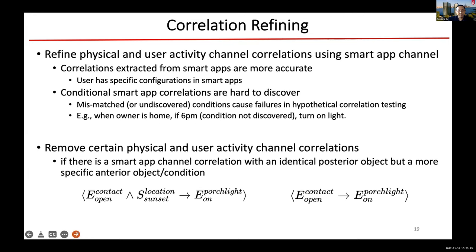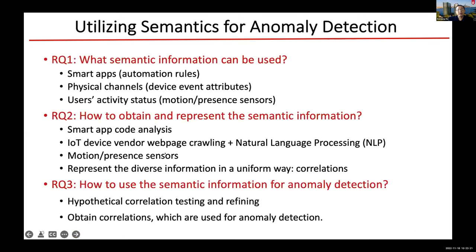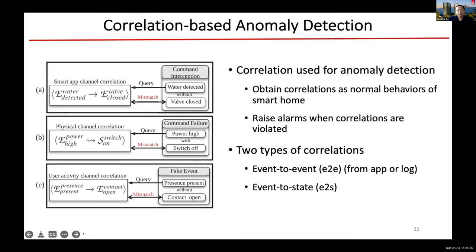After getting the correlation and finalizing the test data, we have a final set of correlations. Once you have the final set of correlations, it can be easily used to detect anomalies. Our system is deployed and observes the smart home in real time, updating states in a virtual shadow engine. Whenever an event happens, based on the correlations, we expect a correlated event to happen as well. If it does not happen, we raise an alert.